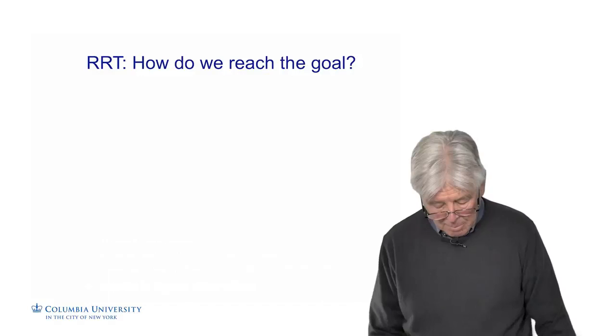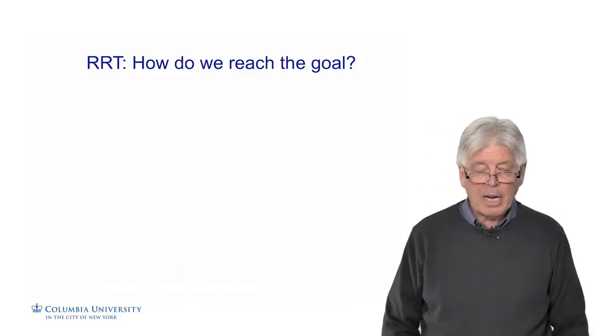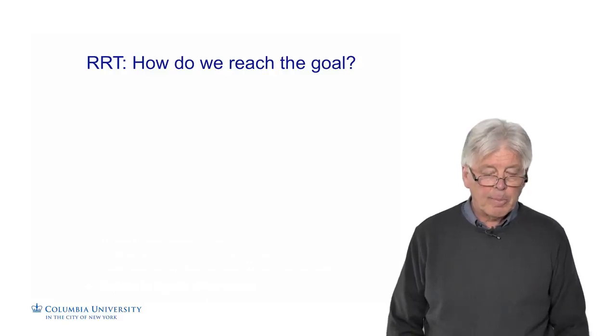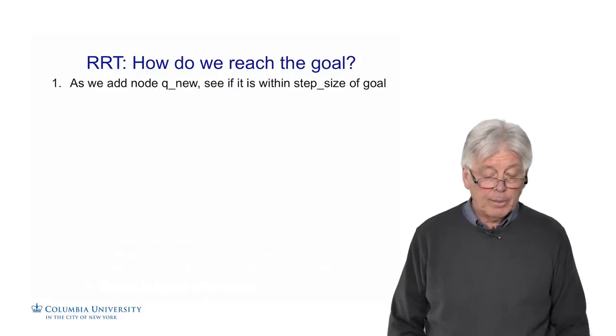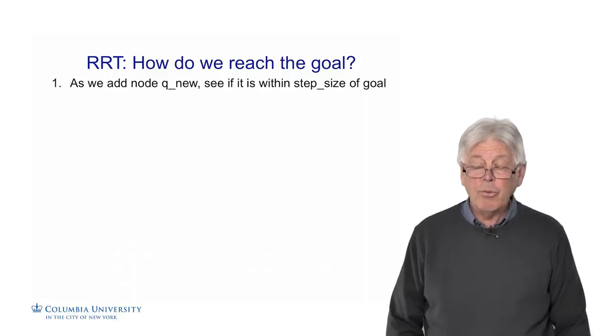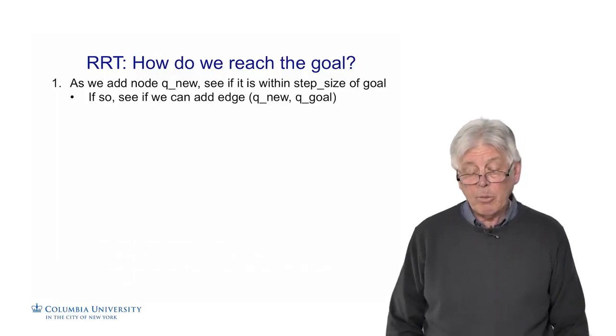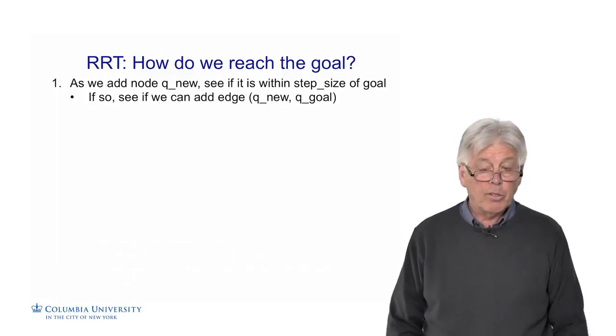We talked about how to build the tree. We haven't talked about how to reach the goal. You build the tree from the start, and you explore the space, but you want to get to the goal. One way is, as we add each new node QNew, we see if it's within the step size of the goal. If it is, we can see if we can add an edge between QNew and QGoal, which means we're not too far away. We can use the local planner and hopefully connect right up to the goal once we get close to it.